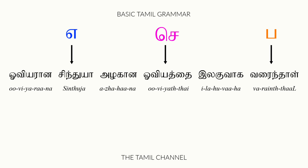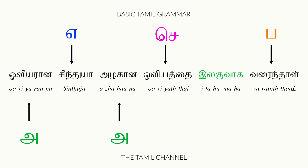Now let's look at the words in front of each of these words. So the word in front of Sinduja is Ovirana, which means artistic — the artistic Sinduja. So Ovirana becomes the alivai's adai molly. Ovium is the painting and Allahana means beautiful, so Allahana is describing the painting and becomes the seppadapurul's adai molly. And the last one, Illahuvaha means easily — she easily painted it, Illahuvaha Varendal. Illahuvaha describes the verb of the sentence.